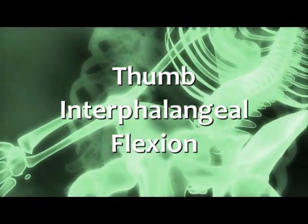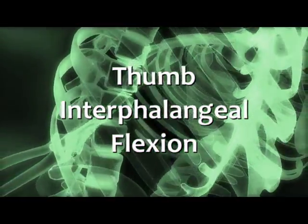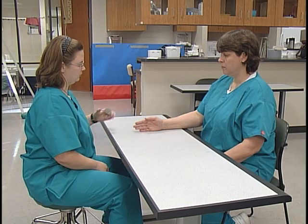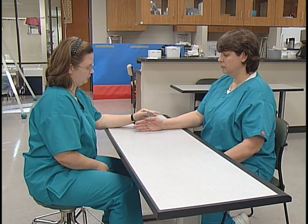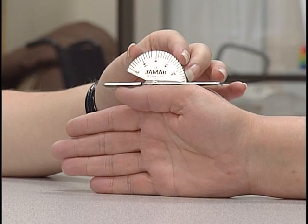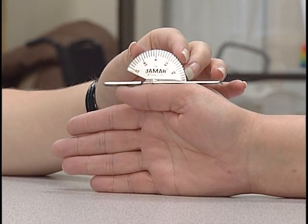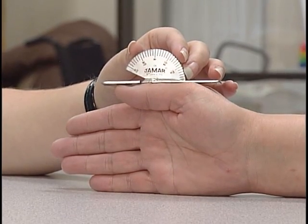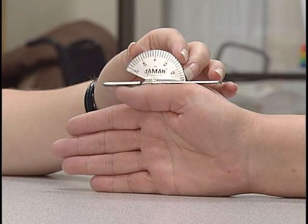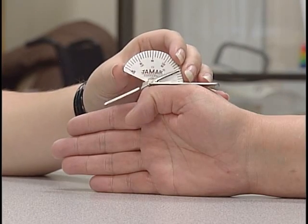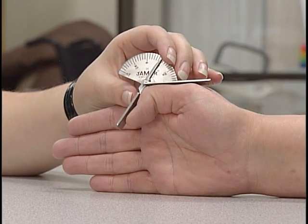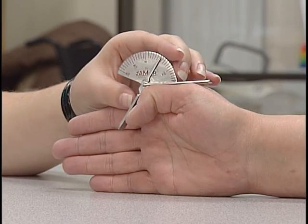For thumb interphalangeal flexion, the position of the subject is the same as for MP flexion. The position of the goniometer axis is on the dorsal surface of the IP joint. The stationary bar is over the proximal phalanx and the movable bar is over the distal phalanx. The client's thumb distal of the IP joint is flexed down. The measurement begins at zero degrees and ranges to 80 to 90 degrees.